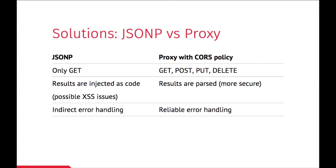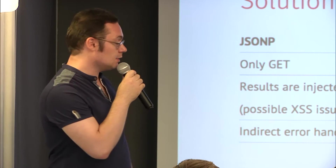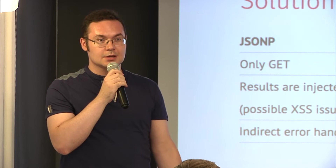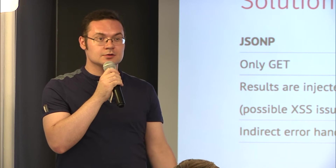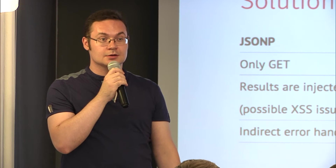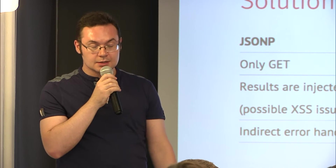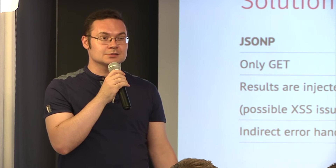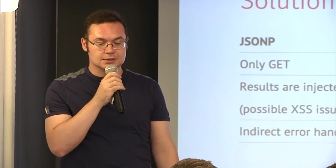If we compare these two approaches: JSONP is simple — if the server supports it, you just write the code in jQuery for example and get the data. But you can only perform GET requests; if you want to send data you won't be able to. JSONP results are injected into code, so there's a possible security problem — if another service was hijacked, you could receive malicious code.